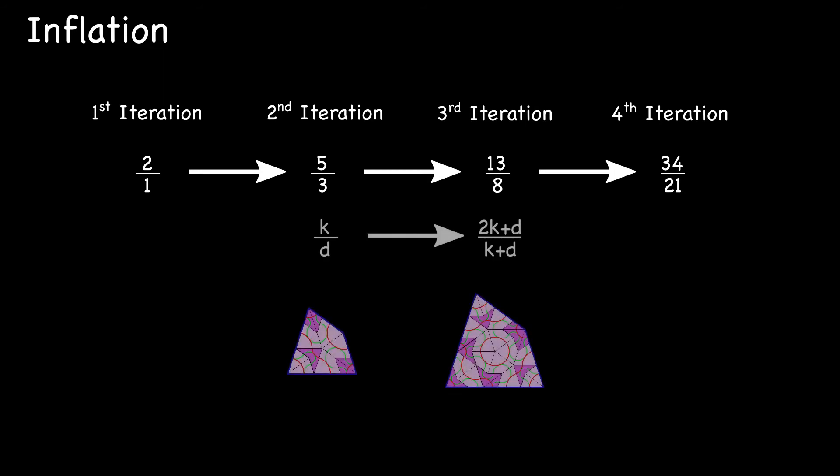Let's go second iteration to third iteration. Three plus five, denominator. Five plus eight, numerator.